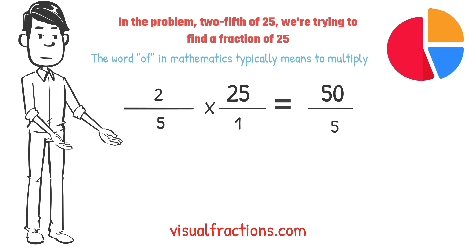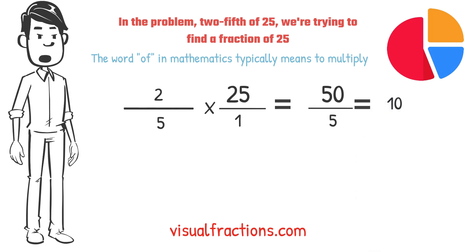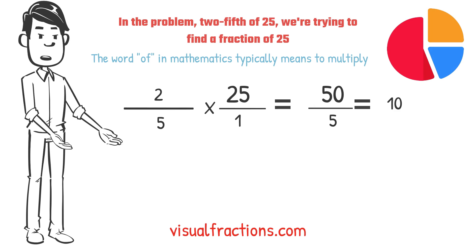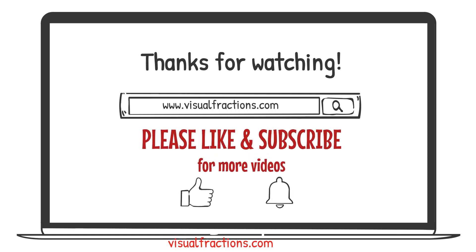To find the final answer, divide the numerator by the denominator. So, 50 divided by 5 equals 10. And there you have it. 2 fifths of 25 is 10.